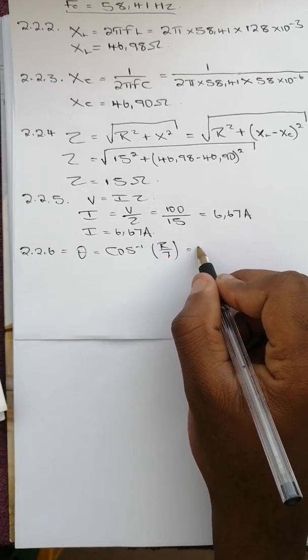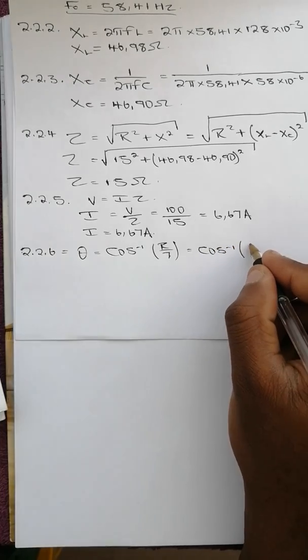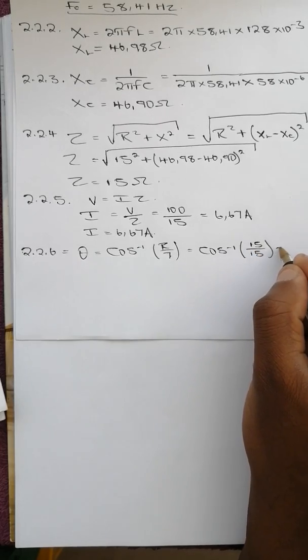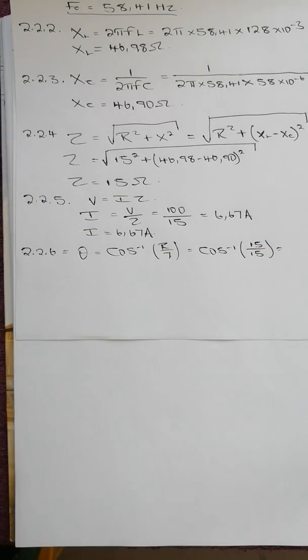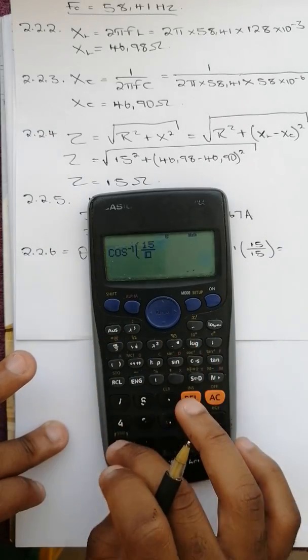Then in this case it's going to be cos inverse of 15 over 15. We punch this into the calculator, it's going to give us zero. Cos inverse of 15 over 15, zero degrees.